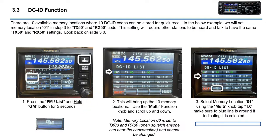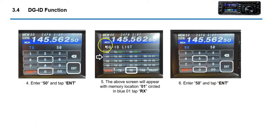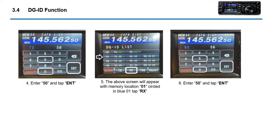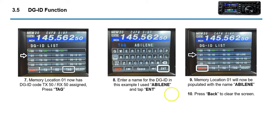The DGID function setup process: press the FM List and hold. This will bring up the 10 memory locations. Select number 1, then touch Transmit, enter 50, tap Enter. On the same screen tap Receive, enter 50 again, then hit Tag and you'll call it Abilene. We're going to do all this in the video so don't worry too much about the steps. If you want to clear the screen, click Back.